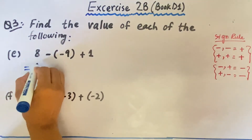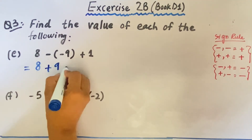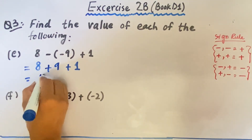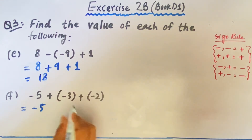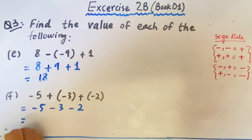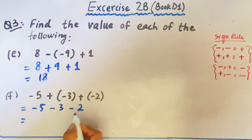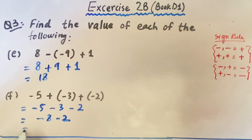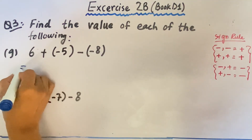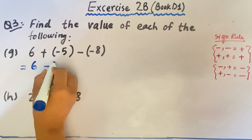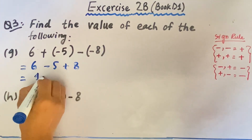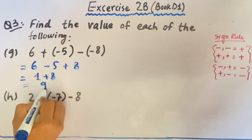In part E, 8 remains the same, then minus minus equals plus 9, and plus 1 remains the same. All are positive numbers, so we add them all and get positive 18. In part F, minus 5 remains the same. Plus minus minus 3, plus minus minus 2 — these all become negative numbers with same sign, so we add them up. Minus minus equals plus 8, minus 8, and minus 2. Minus minus equals plus and we get minus 10 as our answer. In part G, we write 6 as it is, plus minus minus 5, minus minus plus 8. So positive 6 and negative 5 will be 1 plus 8, and the final answer will be positive 9.